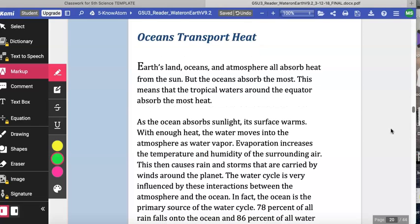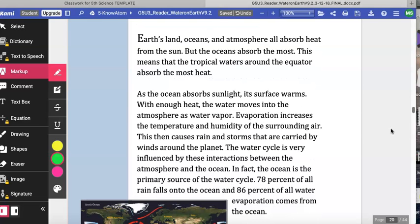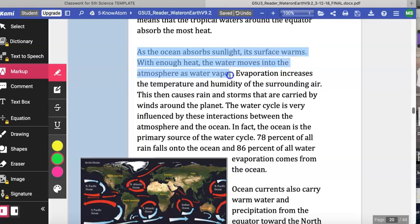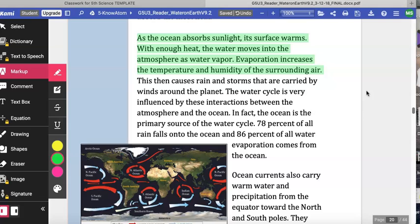Oceans transport heat. Earth's land, oceans, and atmosphere all absorb heat from the sun, but the oceans absorb the most. This means the tropical waters around the equator absorb the most heat. As the ocean absorbs sunlight, its surface warms. With enough heat, the water moves into the atmosphere as water vapor. Evaporation increases the temperature and humidity of the surrounding air. This then causes rain and storms that are carried by winds around the planet. The water cycle is very influenced by these interactions between the atmosphere and the ocean.